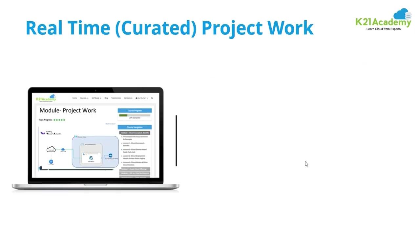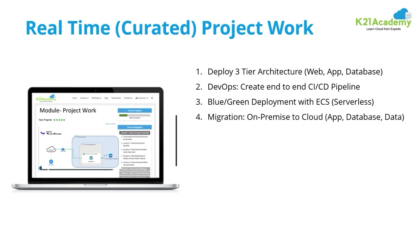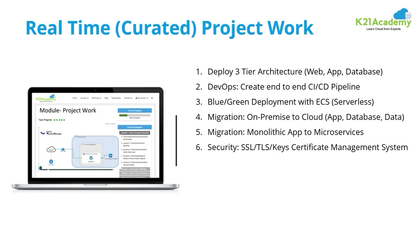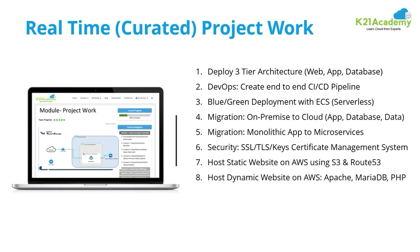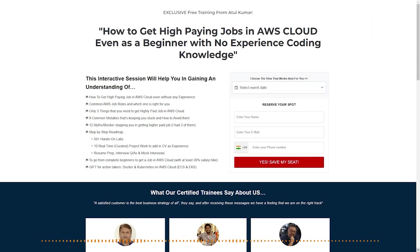So this is the complete list of projects: deploying a three-tier architecture, DevOps CI/CD pipeline, Blue-Green Deployment, migration from on-premise to cloud, monolithic to microservices, security with TLS/SSL certificates, static and dynamic websites, and API Gateway with Lambda and DynamoDB.